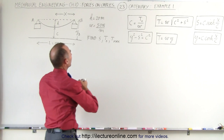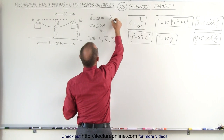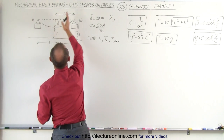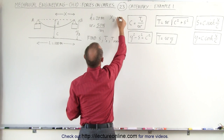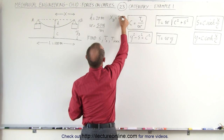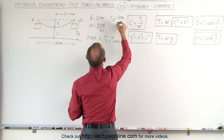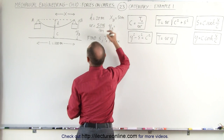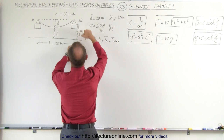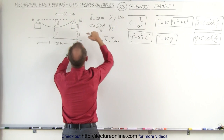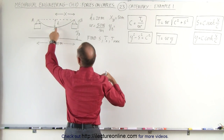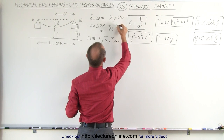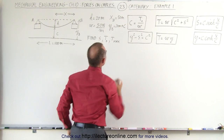X_B — the distance from the origin to support point B — equals 50 meters. Y_B equals H plus C, and since we know H, that gives us 20 meters plus C.